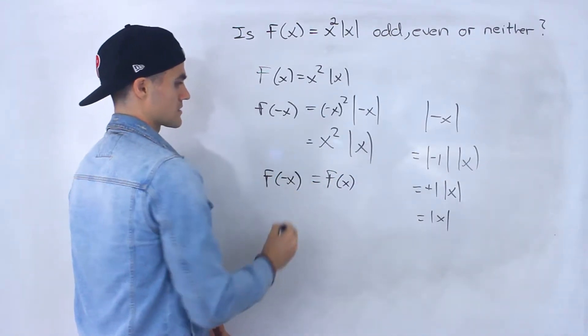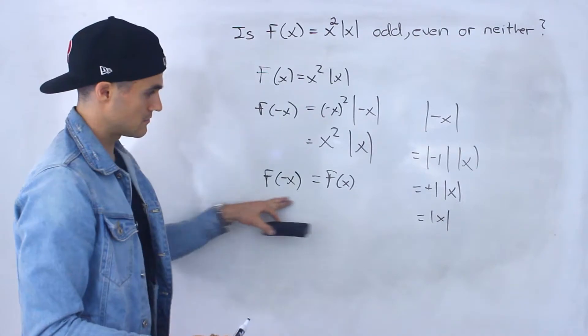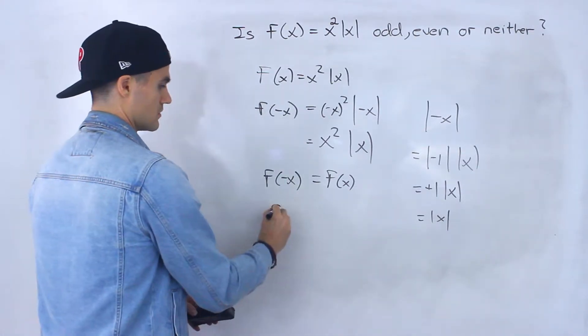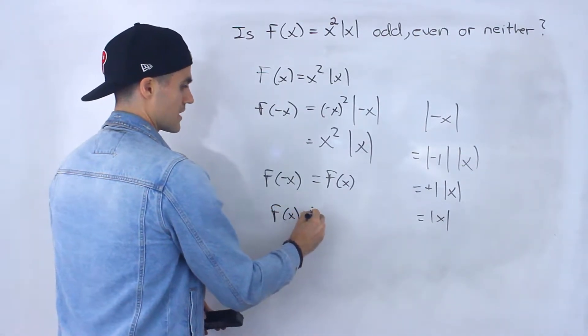And notice we end up with the original function f of x. So f of negative x equals f of x. Because we got this result, it means f of x is even.